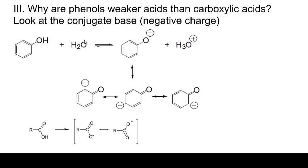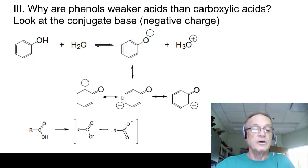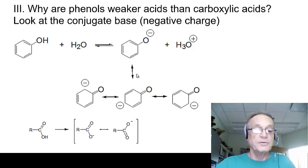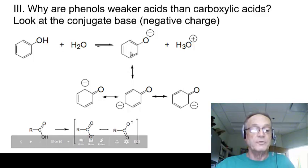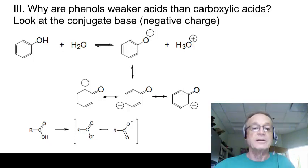Why are phenols weaker acids than carboxylic acids? The conjugate base of phenol has four resonance structures, but only one of the four has the negative charge on oxygen — the other three have it on carbon. The carboxylate, on the other hand, has only two resonance structures, but both have the negative charge on oxygen. That is enough to make the carboxylate more stable than the phenoxide, and therefore the carboxylic acid is a stronger acid than phenol. And that's the end of the lecture.